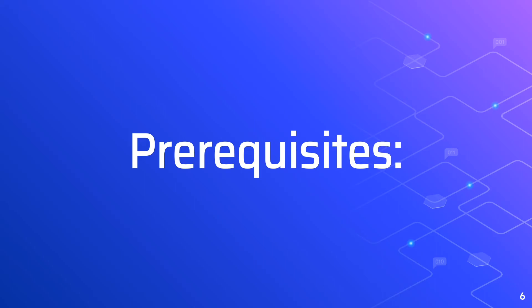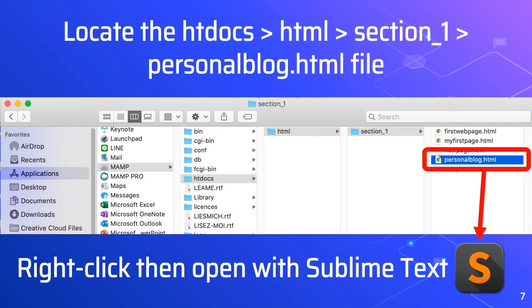Locate the htdocs, html, section 1, and personalblog.html file. You need to open that file in Sublime Text by right-clicking and choosing Sublime Text.